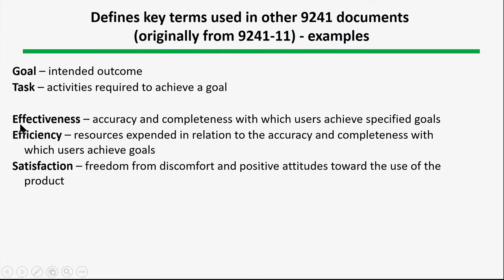The concept of usability refers to three key terms: effectiveness, efficiency, and satisfaction. The ISO definitions: effectiveness concerns accuracy and completeness with regard to specified goals; efficiency concerns resources expended relative to those goals; and satisfaction is freedom from discomfort and positive attitudes towards the use of a product.